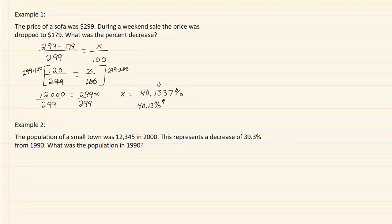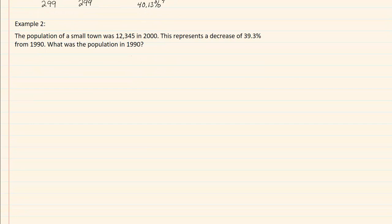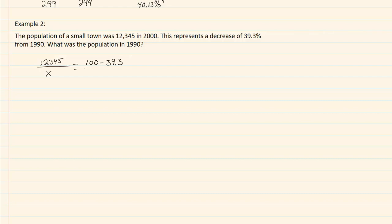Let's take a look at example two. The population of a small town was twelve thousand three hundred and forty-five in the year two thousand. This represents a decrease of thirty-nine point three percent from 1990. What was the population in 1990? So our final amount is twelve thousand three hundred and forty-five, and we're looking for the population in 1990, which will be our x. We start with a hundred percent minus our percent given, because it's a decrease — so one hundred minus thirty-nine point three, all over a hundred.